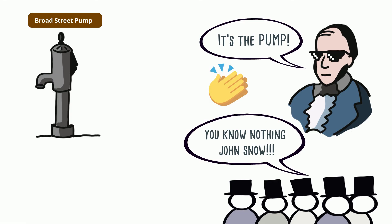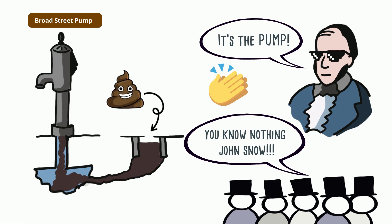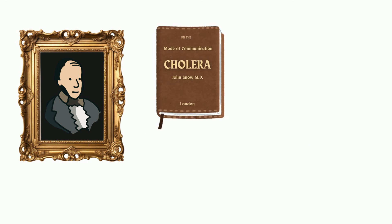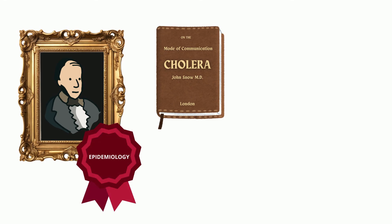Investigations later revealed that the pump was drawing water from an area contaminated by fecal material from a nearby cesspit that was used to collect sewage. Snow continued to use data to show how cholera was transmitted. His pioneering work laid the foundation for modern epidemiology — the study of how and why diseases occur in different groups of people. His cholera map is a classic example of demonstrating the value of mapping in understanding and controlling the spread of diseases.